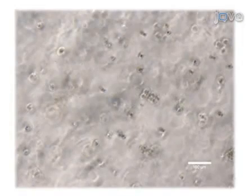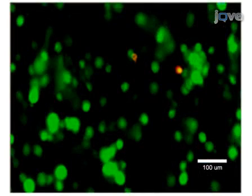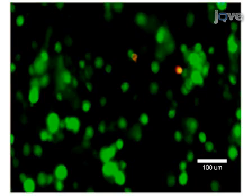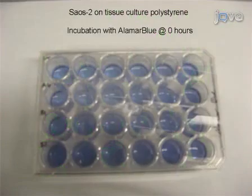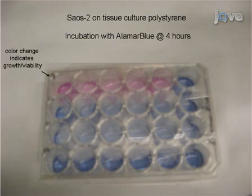Shown here are HMSCs within HA-based hydrogels one hour following encapsulation. Because synthesized hydrogels are typically transparent, cells can be visualized for morphology using light microscopy. The same cells were visualized for viability 24 hours post-encapsulation using a fluorescent live-dead staining kit. We used Calcein AM to detect live cells and ethidium homodimer for dead cells, and observed greater than 95% viability. We also used the Alamar Blue assay to determine the level of cell proliferation, measured by how well the cells metabolize the assay reagent, resulting in a color change.